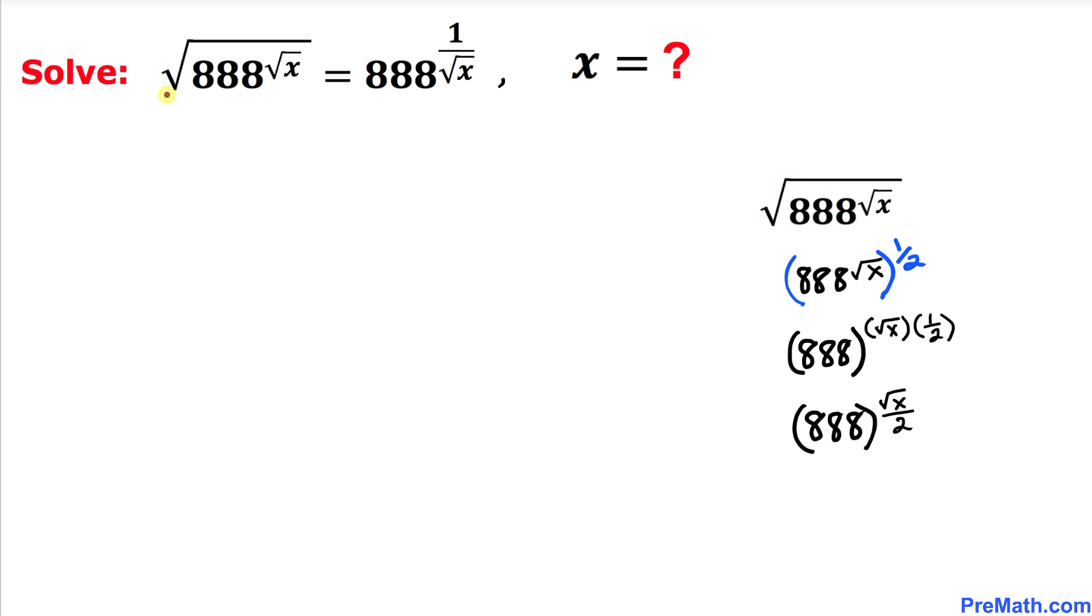Therefore, on the left-hand side, I am going to replace this expression. So the left-hand side can now be written as 888 to the power of square root of x divided by 2.